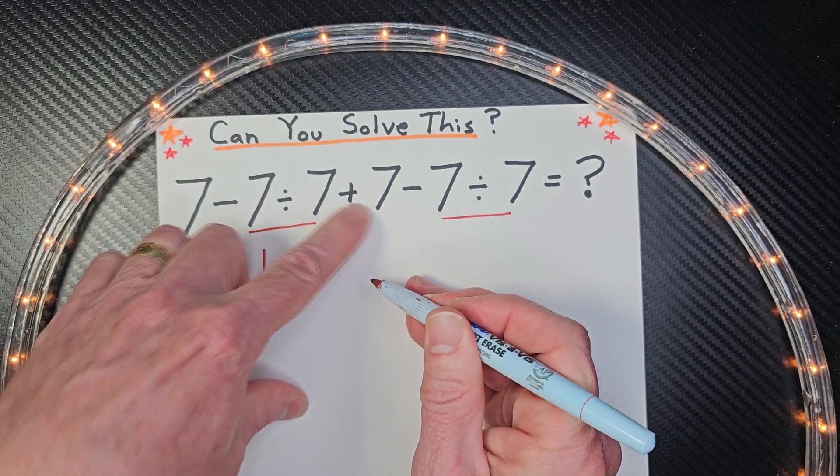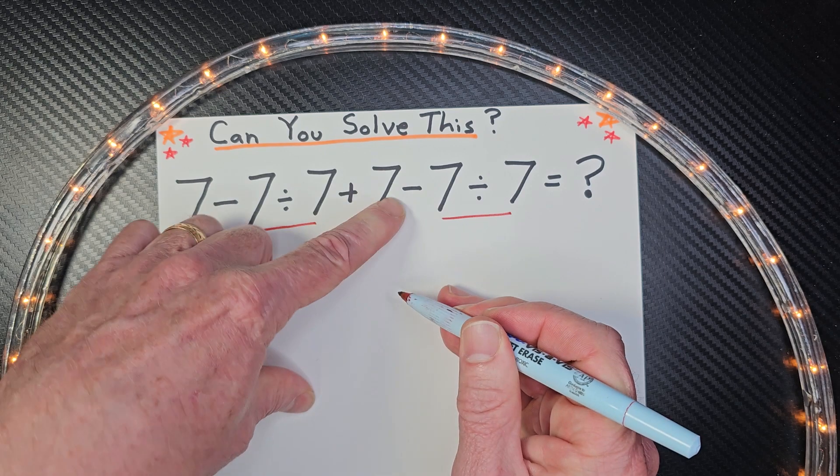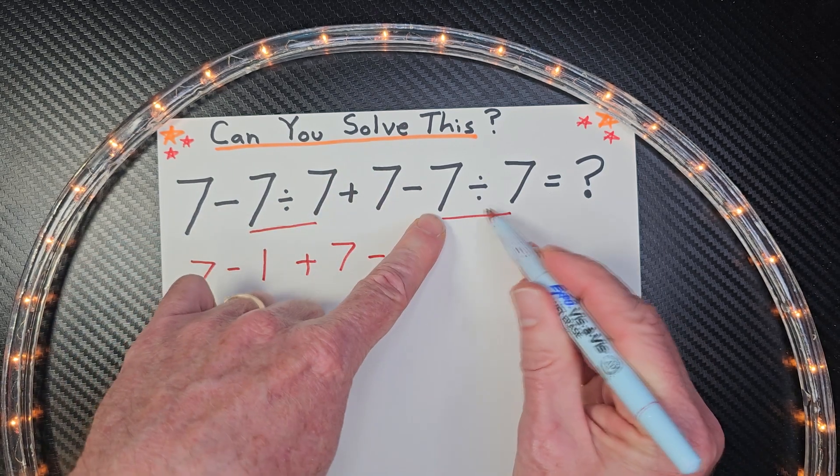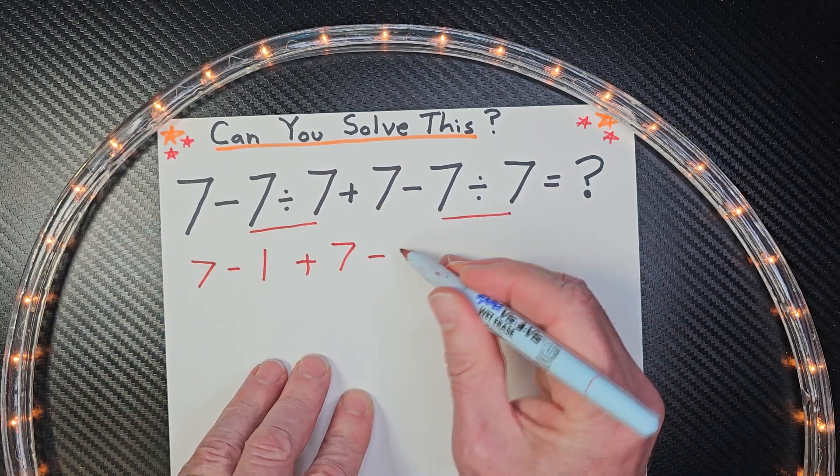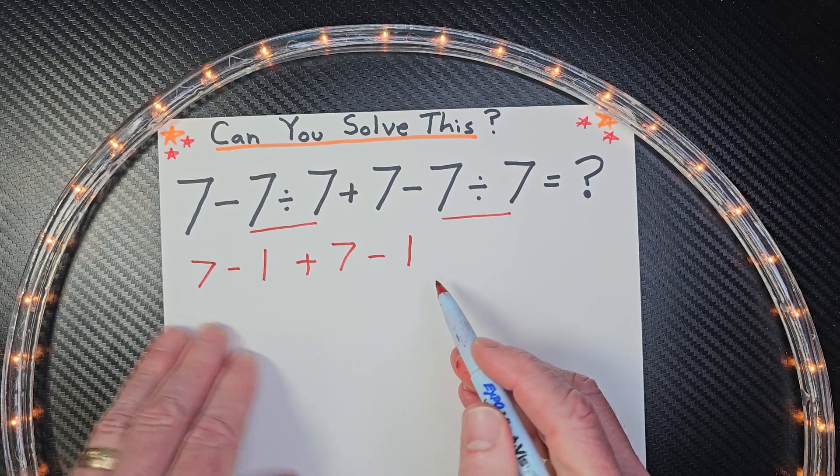Plus 7 minus 7 divided by 7, again, is 1. So now I have that part.